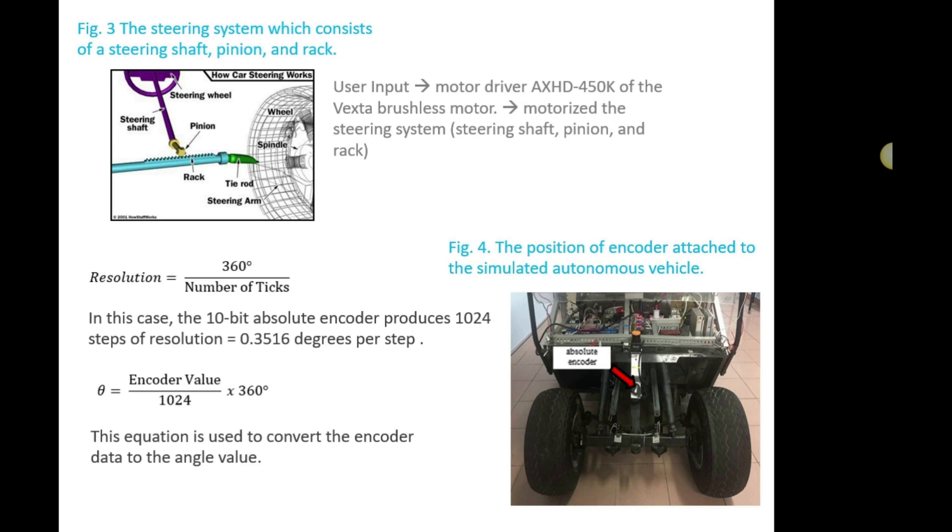We are using a 10-bit absolute encoder to read the degree of the steering. The absolute encoder is used as a feedback sensor to measure the angular movement of the steering system. The 10-bit absolute encoder produces 1024 steps with a resolution of 0.3516 degrees per step. The equation is used to convert the encoder data into angle value required by the system.